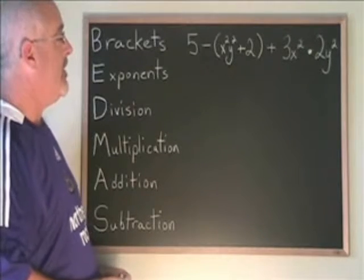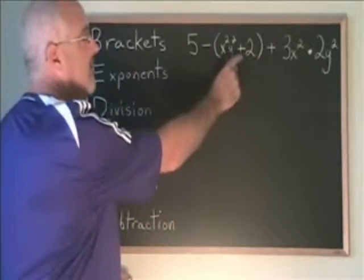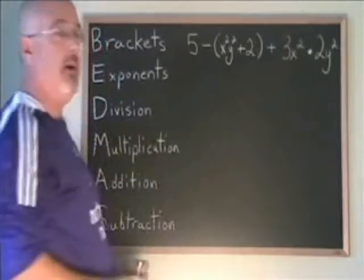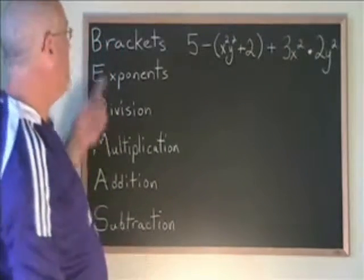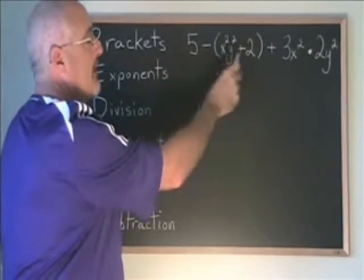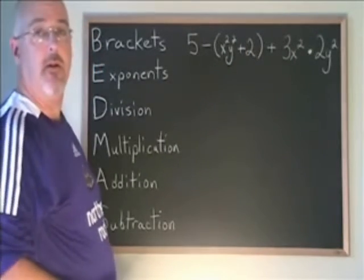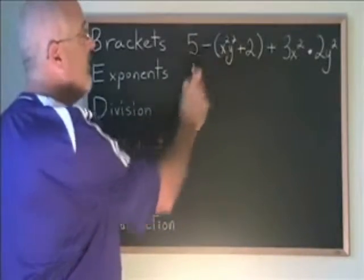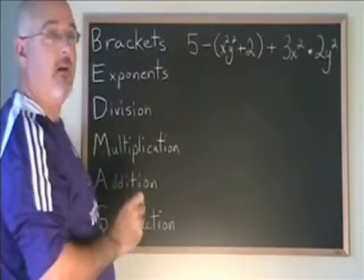In this example, I have a bracket with an addition inside of it, a subtraction, another addition, and a multiplication. BEDMAS tells me do the bracket first. I try to simplify inside of the bracket, but I find that there are no similar terms, so I cannot simplify inside the bracket. What I can do is I can remove the bracket and correct the signs, so I will do that now.